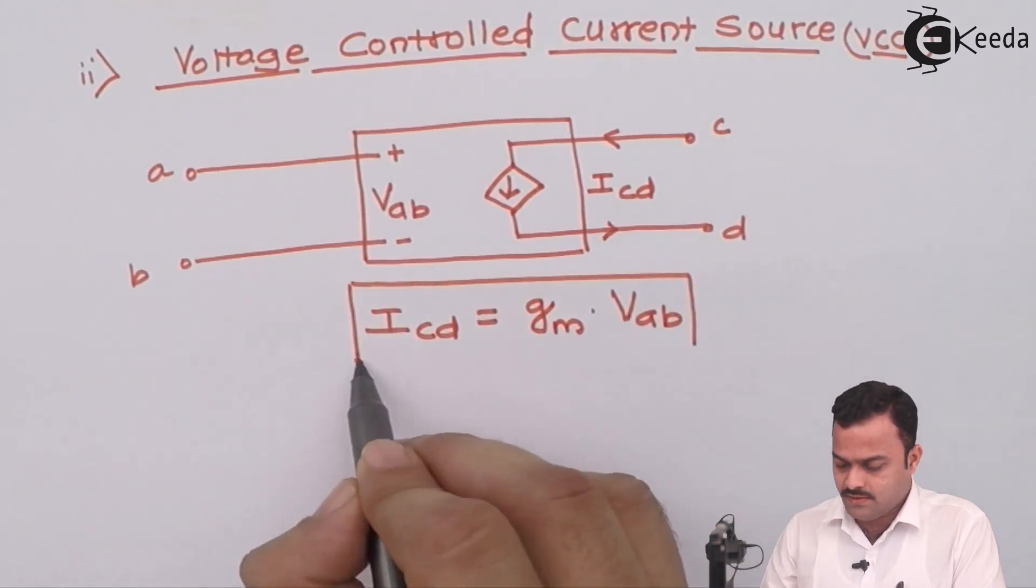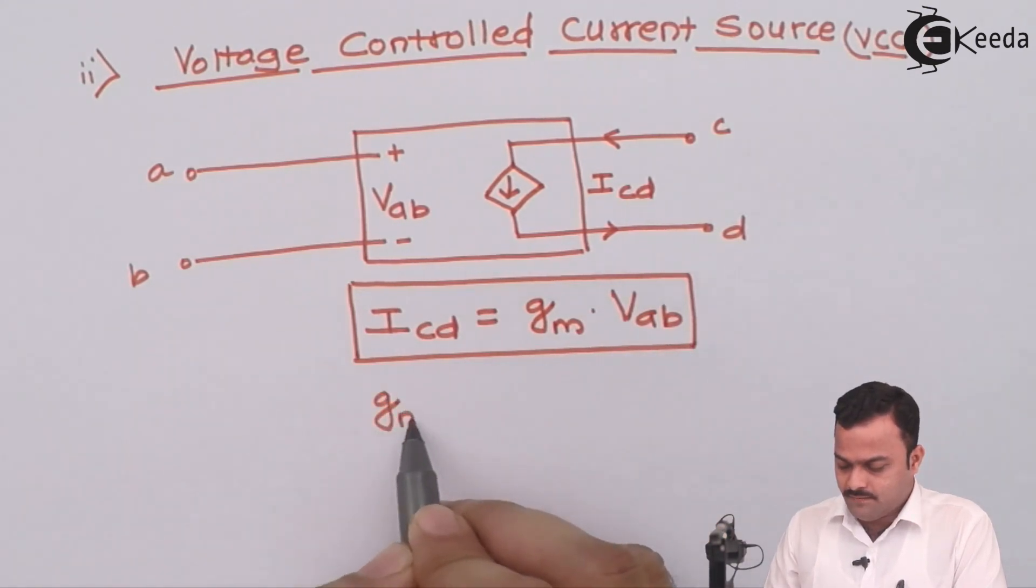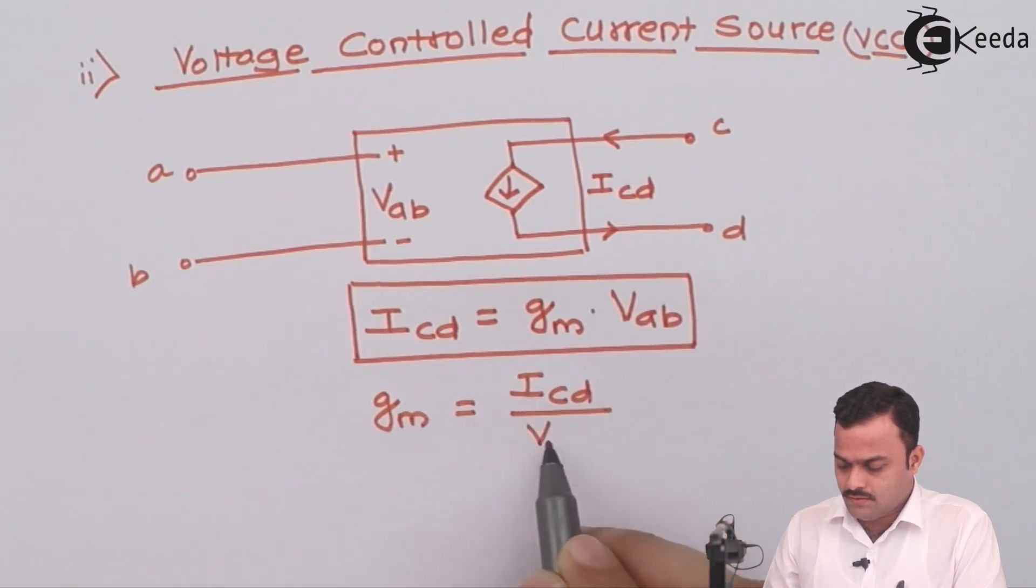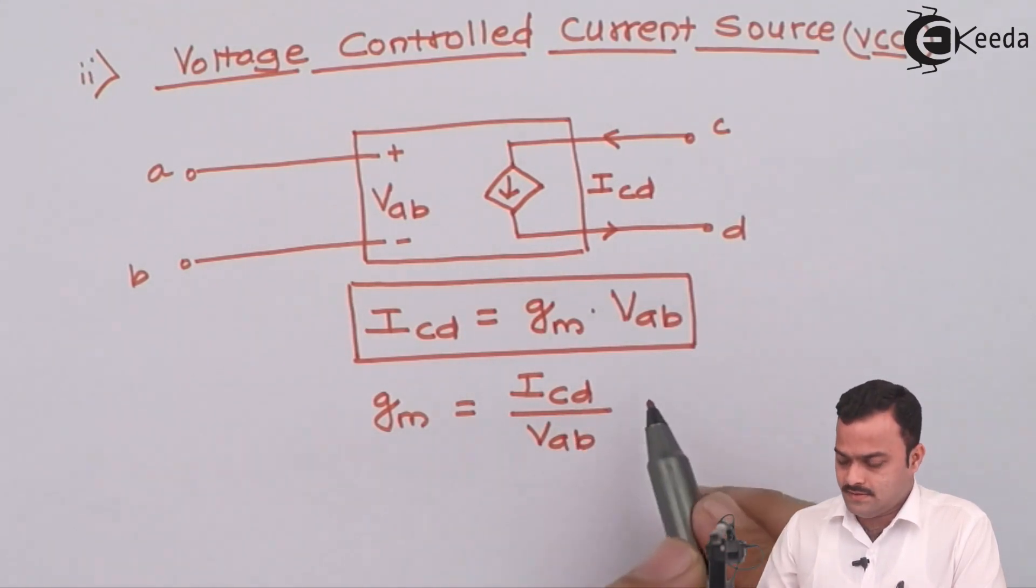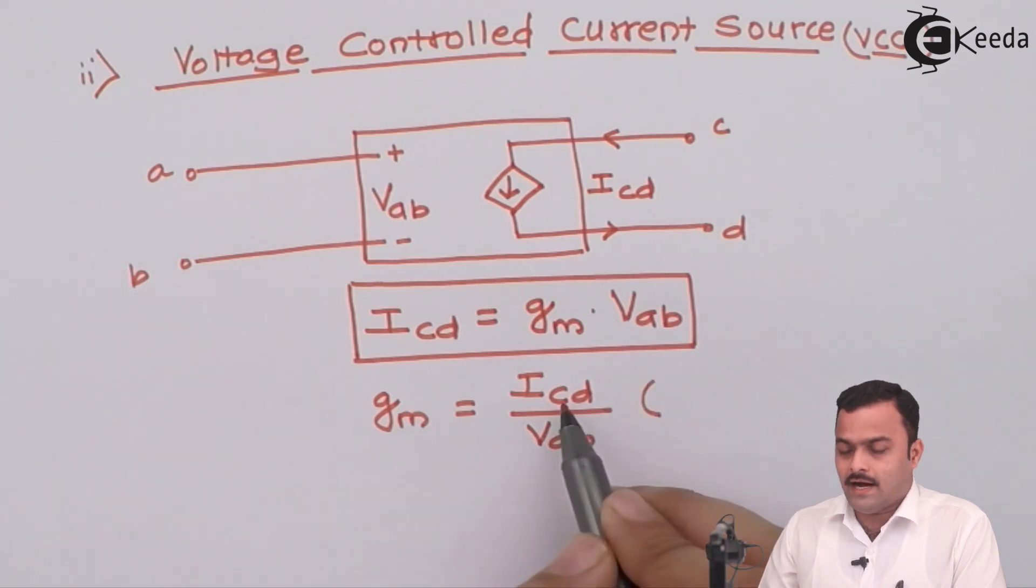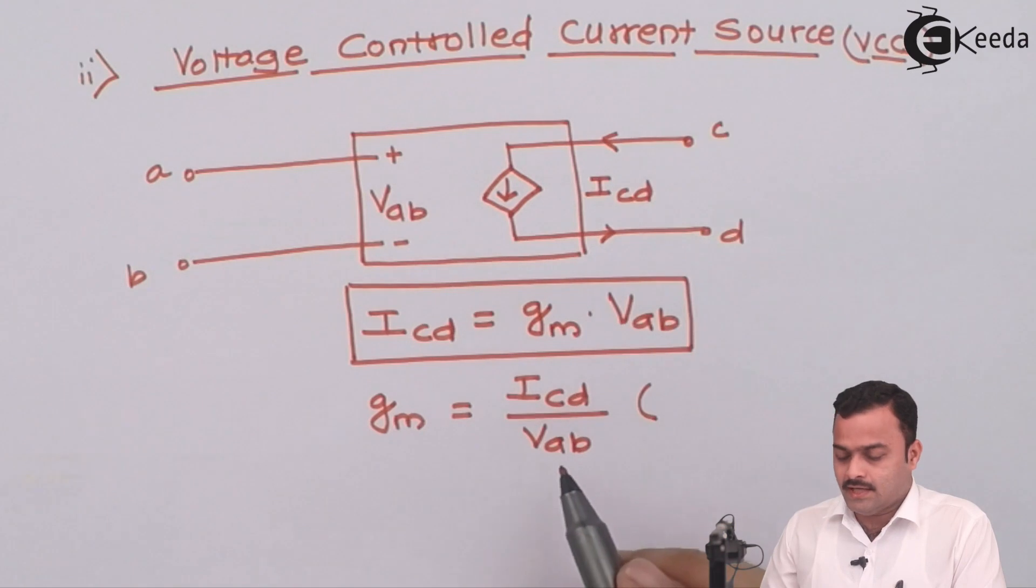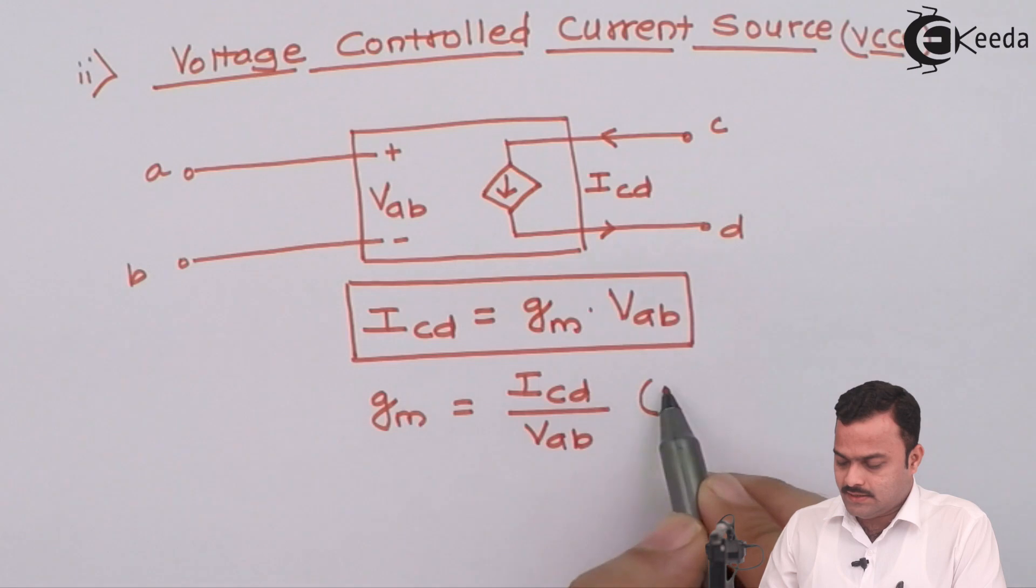If I solve for GM, I will get GM as the ratio of current and voltage. And current by voltage is conductance. Since ICD is a current of output and VAB is voltage of input port, I can say this is transconductance.